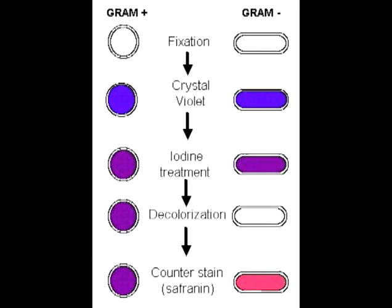And the next step, the decolorization step, alcohol or acetone is added, and that causes the dehydration of the peptidoglycan layer. And when it's dehydrated, it causes it to shrink, and in gram-positive bacteria, that dye is trapped below the phospholipid bilayer.